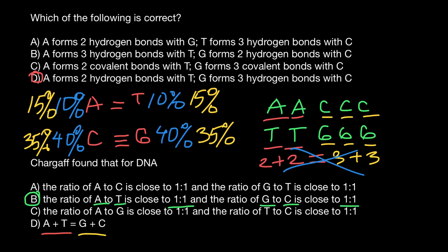But if we take bases that don't pair with each other — for example, A plus G — then they would equal C plus T. One more time: if we take thymine and cytosine, the frequency of these two bases equals the frequency of adenine and guanine. Or if we take thymine and guanine, their frequency equals the frequency of adenine and cytosine.